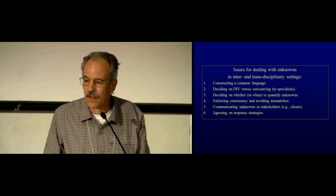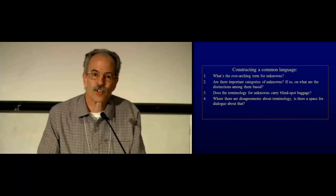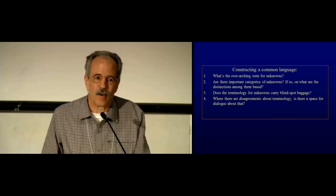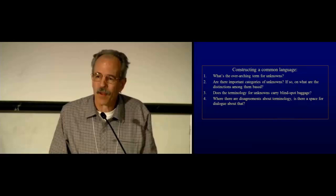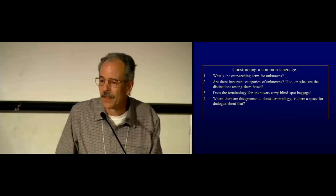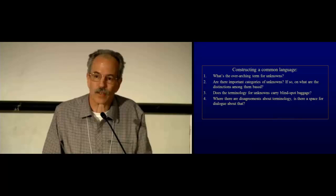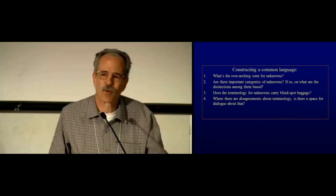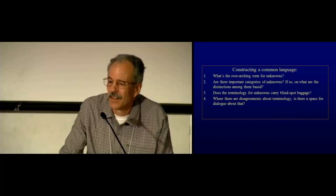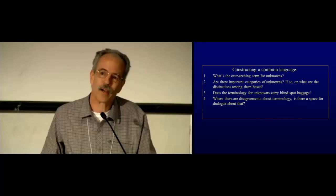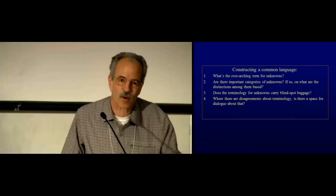Okay, so constructing a common language. Well, briefly, what's your overarching term for unknowns? Is it wickedness? Is it uncertainty? Is it ignorance? And what does that overarching term say? What does it convey to you and your colleagues and stakeholders? Are there important distinctions among kinds of unknowns? And if so, what are these based on? What are these distinctions doing for people? And what do people do with them? Does the terminology that we have for unknowns carry blind spot baggage? Wickedness, I think, for example, does. Why should we limit these things just without talking about wicked problems or complex problems? What about high degree of freedom problems? What about wide open opportunity problems? You know, the fact that I can come up with these things so easily indicates how bad this blind spot really is. And where there are disagreements about terminology, is there a space for dialogue about this? Can we talk about why a term like risk means very different things to different people, different practitioners, and in different disciplines?